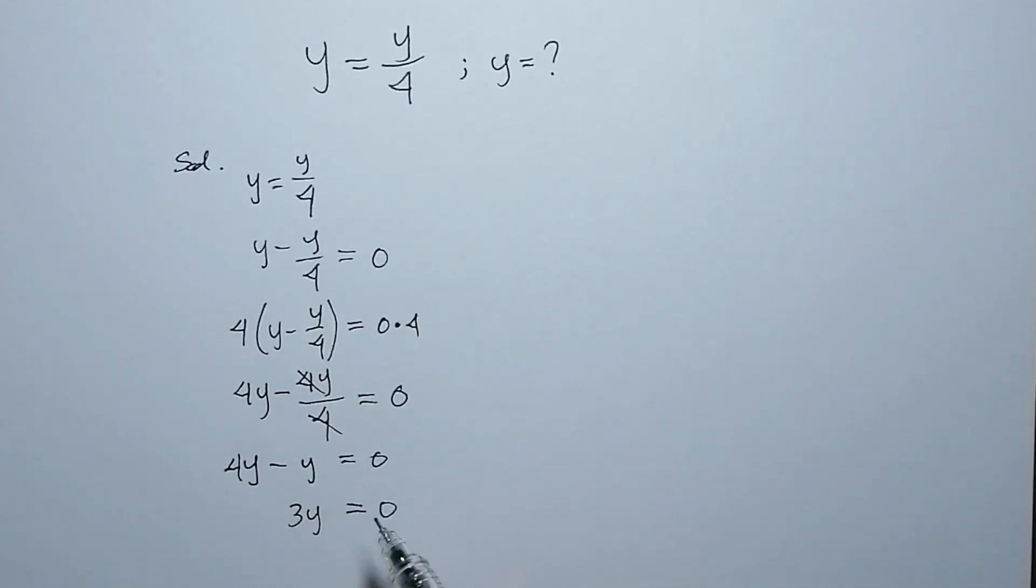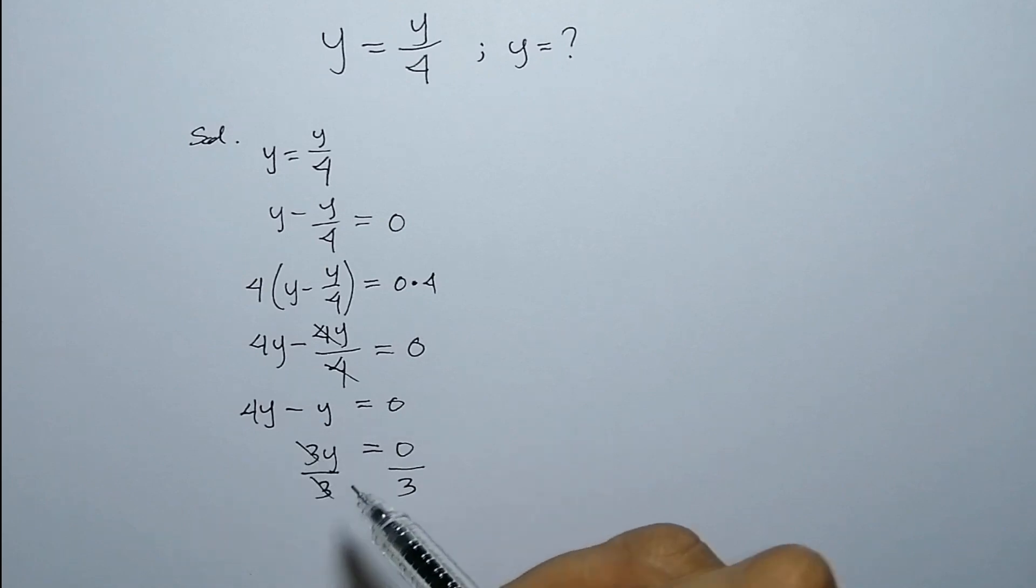Now, in this case, we're going to divide 3 on both sides. We cancel out 3, so y equals 0 divided by 3 is 0.